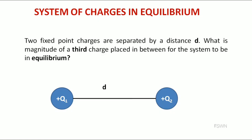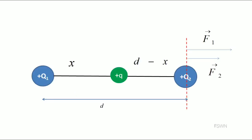To find the position of the third charge, we found out the net force acting on the charge plus small q and equated that to zero. To find the magnitude of the third charge, we have to choose either of the two charges — plus q1 or plus q2 — and find the net force acting on that charge and equate that to zero. In this example, I am choosing plus q2 and finding out the net force acting on q2.